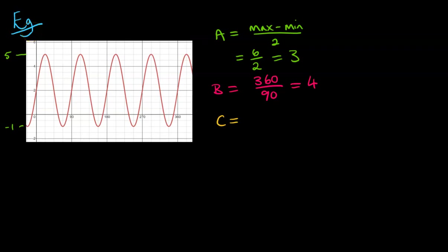Next is to look at the value of C, which is our horizontal shift, and we want to look at how far left or right our graph has moved along compared to the original sine curve. So the original sine curve goes like this, where it starts at the y-axis at this median line here, which on our original sine curve is the x-axis.